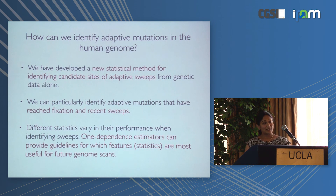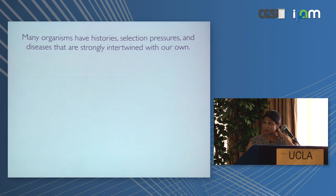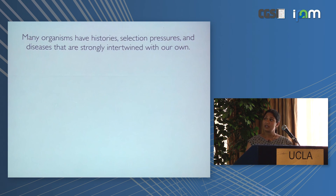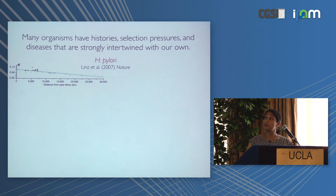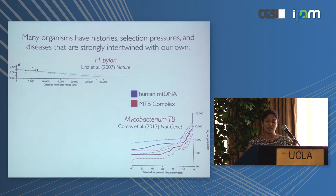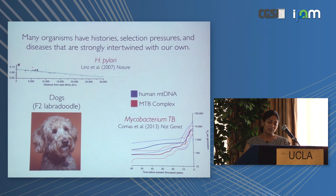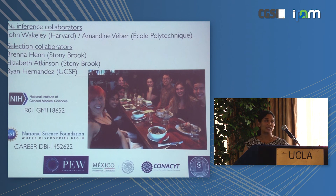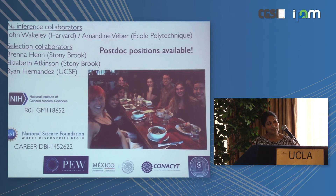Even if you don't work on humans, many organisms have histories intertwined with our own: Helicobacter pylori shows decreasing heterozygosity with distance from Africa like humans; Mycobacterium tuberculosis has been shown to have left Africa along with humans and undergone an expansion during the Neolithic. Our Bayesian framework is particularly effective for detecting very recent and strong sweeps, or fixed sweeps, where other statistics become undefined. Thanks to my lab, and if you're interested in joining please talk to me.